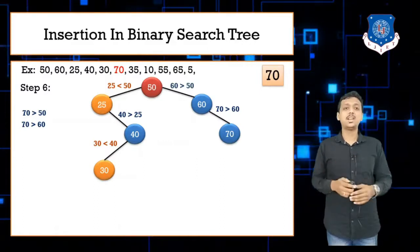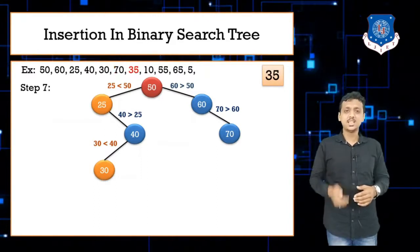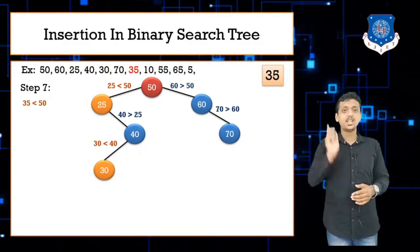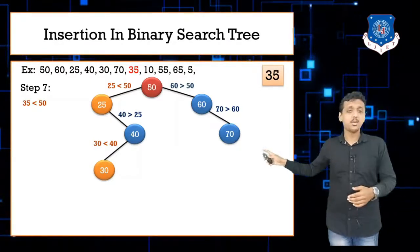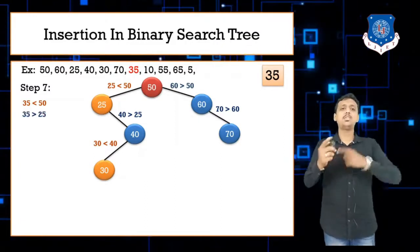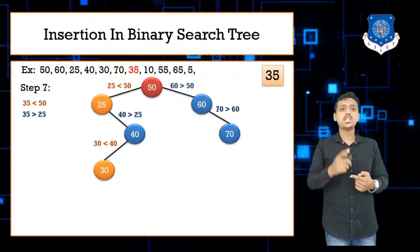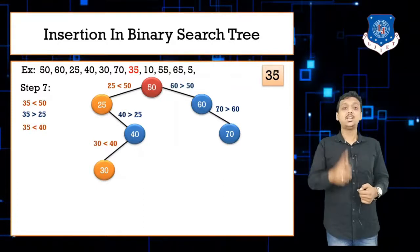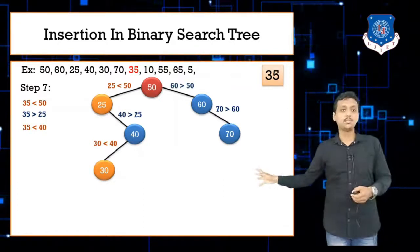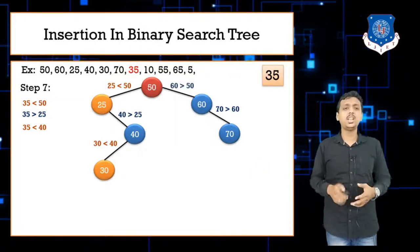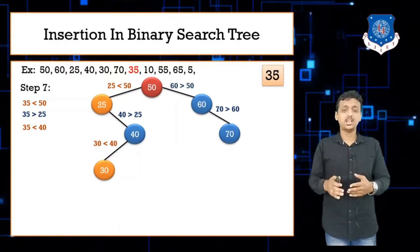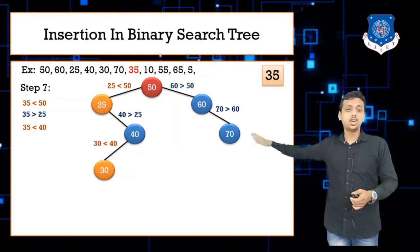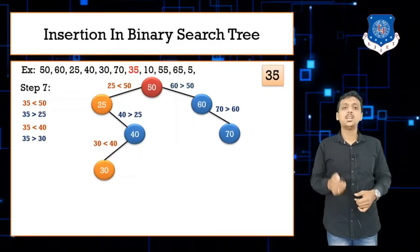Step 7: next value is 35. Compare 35 with 50 — 35 is less than 50, so move left. Compare 35 with 25 — 35 is greater than 25, so move right. On the right side we find 40. Compare 35 with 40 — 35 is less than 40, so move left. We find 30. Compare 35 with 30 — 35 is greater than 30, so insert 35 on the right side of 30.